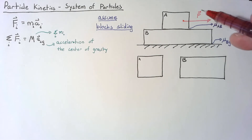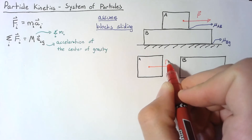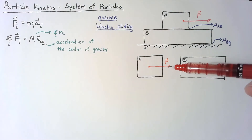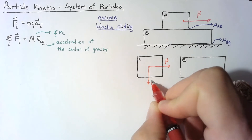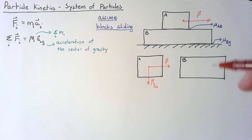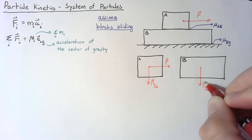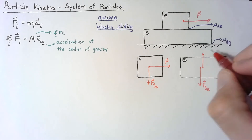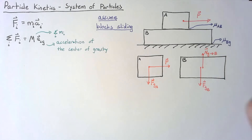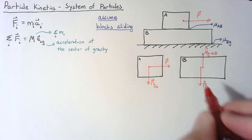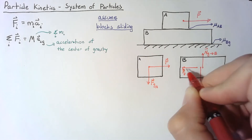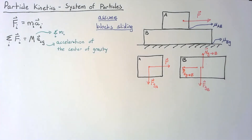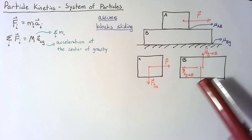The first force we can identify is P, which points directly to the right. P is what we call an external force — it has been externally applied to one of our blocks. Another external force is the force of gravity acting on A. On block B, we also have the force of gravity, which is still an external force. We additionally have the normal force of the ground pushing back on B, and since B is moving against the ground, the friction force acting to the left — opposing the movement caused by P — acting from the ground onto B. So A has two external forces and B has three external forces.